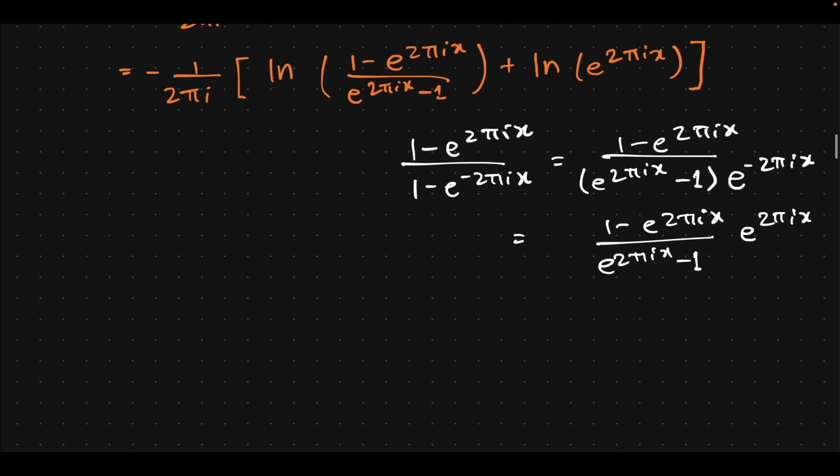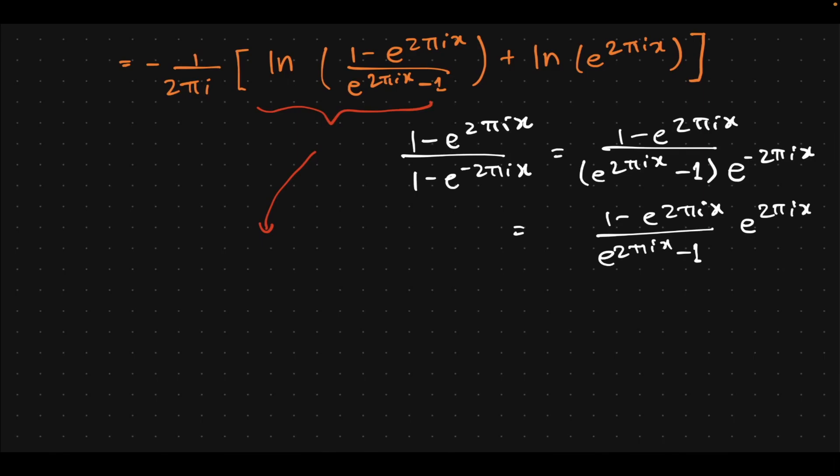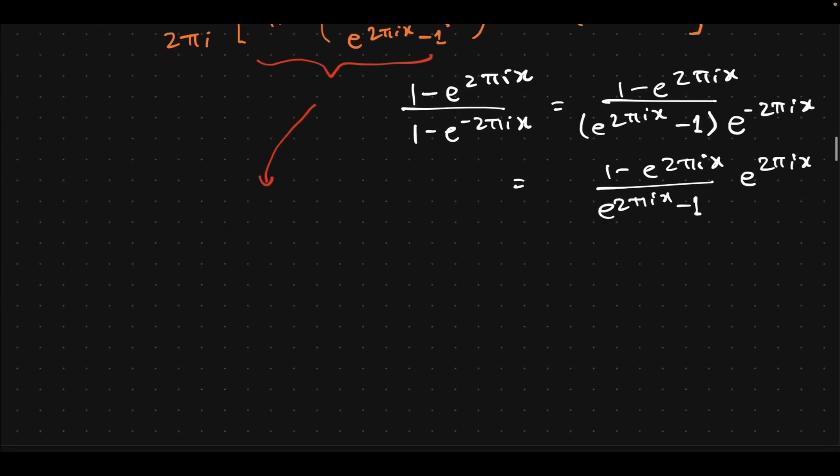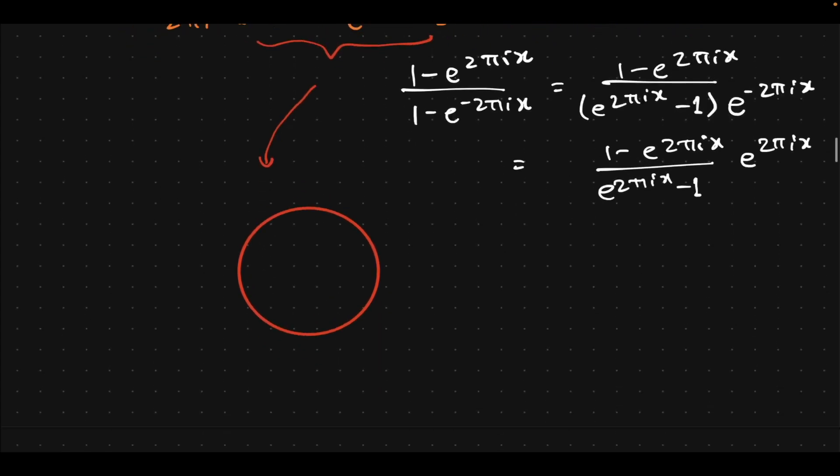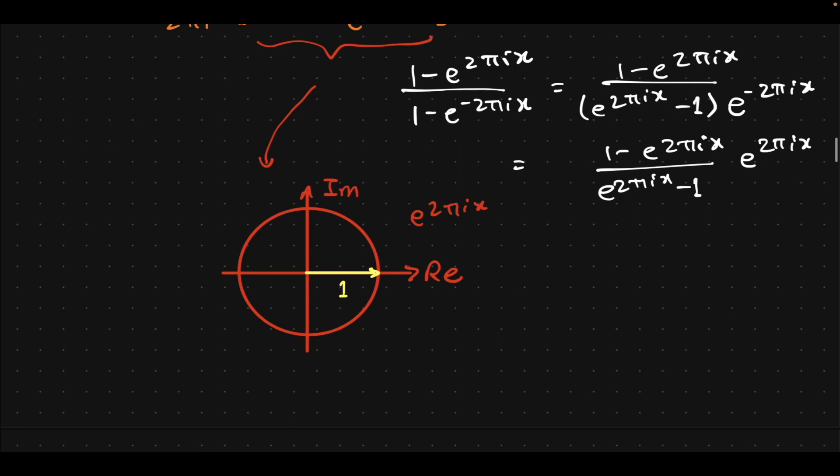So we have quantities 1 minus e^(2πix) and e^(2πix) minus 1. Let's consider the entire thing as it is, but for that let's consider the unit circle, which will represent e^(2πix), because this e^(2πix) will just be a unit circle in the complex plane. And 1 in this case is a unit vector on the real axis, like that. So that's 1.